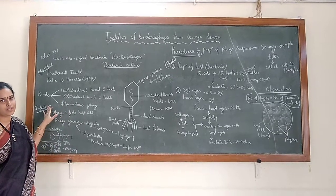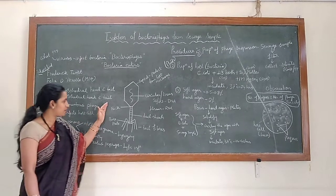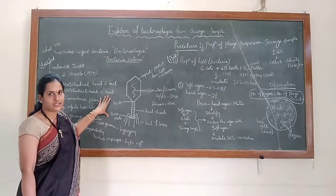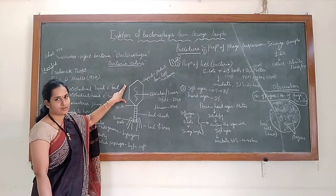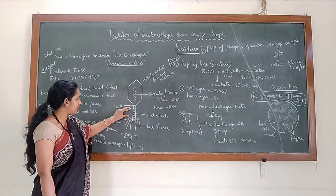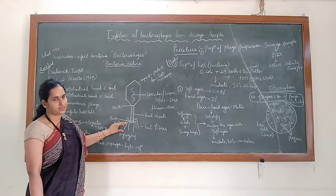So these are the three different types of phages you can see. And here I have put the diagram of the phage where you can see it has been divided into a head which is icosahedral in shape and the tail along with the tail fibers.